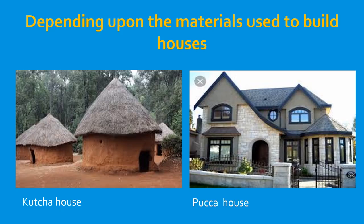Types of houses. Depending upon the materials used to build houses, there are two types of houses: kaccha houses and pakka houses. Kaccha houses are mostly seen in villages, whereas pakka houses are mostly seen in cities. We need mud, straw, and wood to build a kaccha house, whereas for pakka houses we need materials such as cement, bricks, and stones.